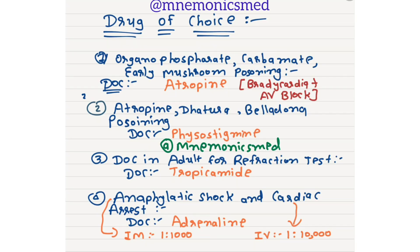Drug of choice for organophosphate, carbamate poisoning, aluminium poisoning, or bradycardia with AV block is atropine. For atropine poisoning, datura poisoning, and belladonna poisoning, drug of choice is physostigmine.